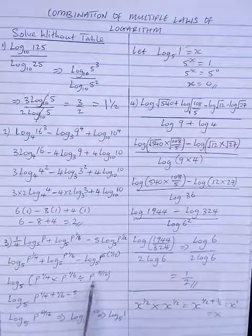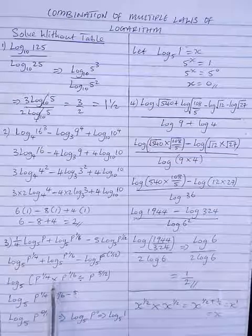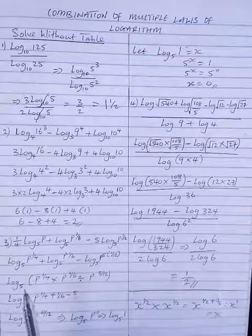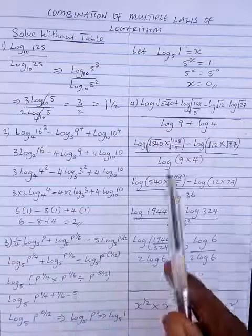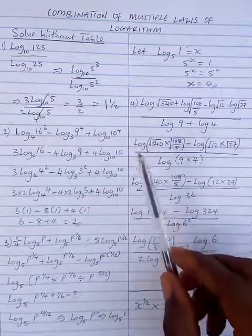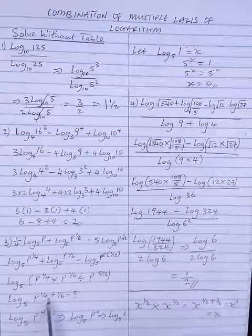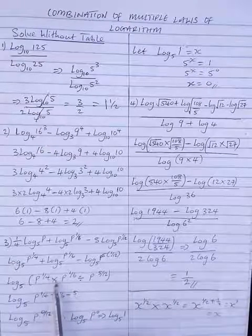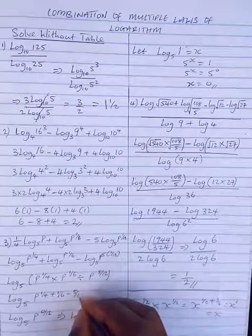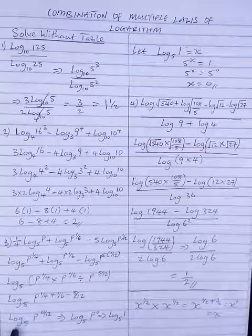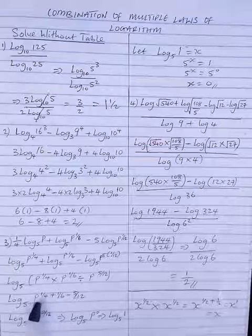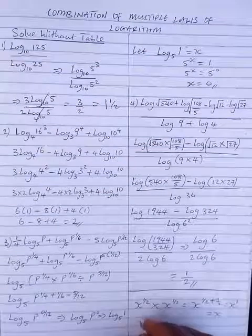Since the bases are the same, we apply the multiplication and division laws of indices. You can revisit other videos on indices to be grounded before tackling this topic — this is the third tutorial under logarithms. We now have p raised to power one quarter, and when we apply indices: for multiplication we add powers, and for division we subtract powers. This is equivalent to one over four plus one over six minus five over twelve.